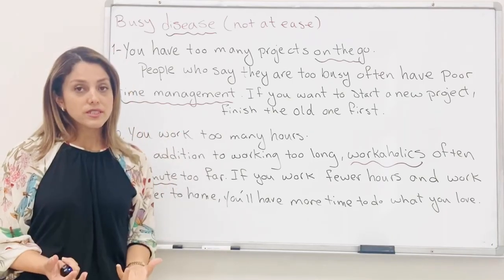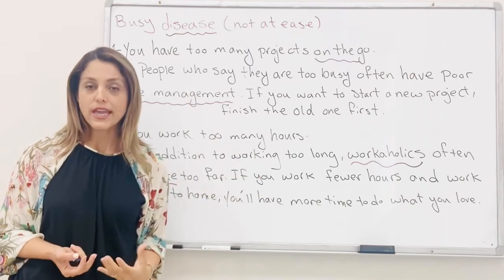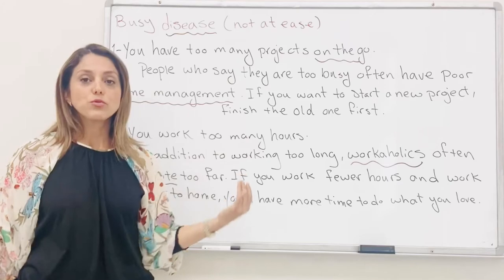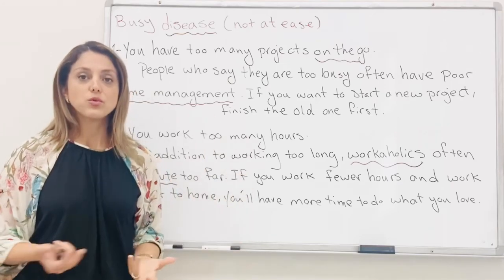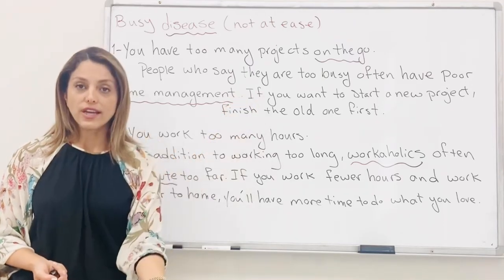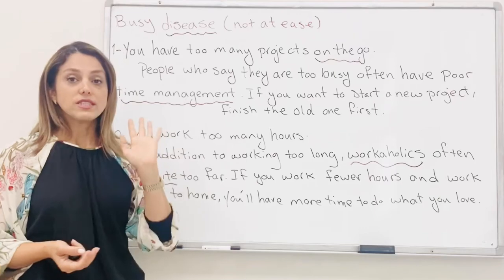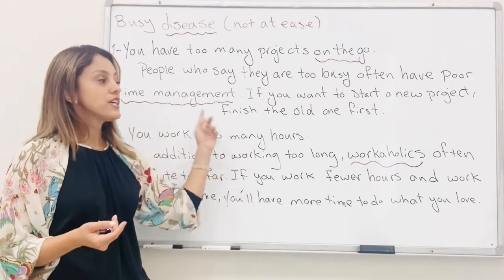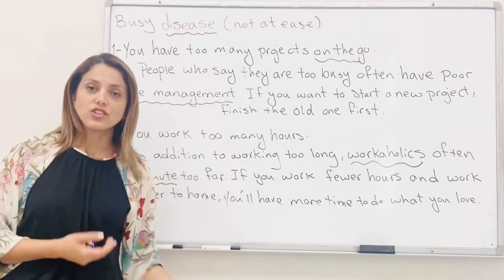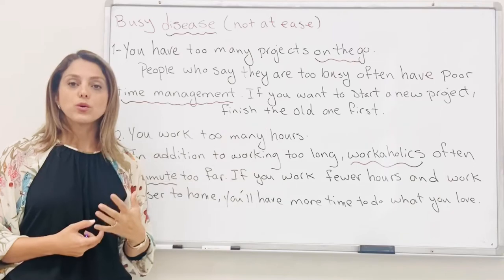If you don't have that ability, you have too many things and you cannot schedule them properly, or maybe you don't have priorities — which one to do first, which one second — so you're too busy and unorganized. What you can do: if someone offers you a new project, say 'I don't have time right now,' finish the old ones first, and then take on new projects.